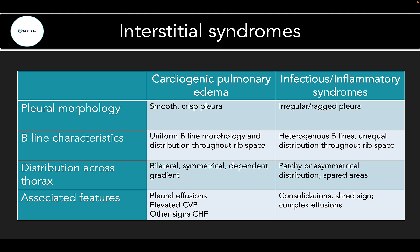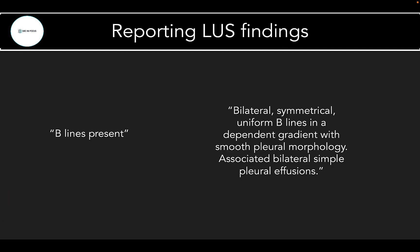Here's our completed table to help differentiate cardiogenic pulmonary edema B-lines from infectious/inflammatory B-lines, looking at pleural morphology, B-line characteristics, distribution across the thorax, and associated ultrasound findings. Now that you've recognized all the information B-lines can give you, it's important to document findings properly — just writing 'B-lines present' is not nearly as useful. Be specific about B-line morphology, distribution, and the pleural line. Note also that these two types of B-lines can coexist, and a mixed pattern may have characteristics of both, making detailed description especially important.